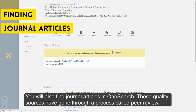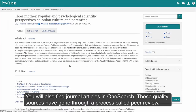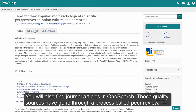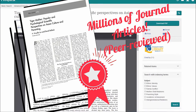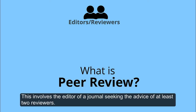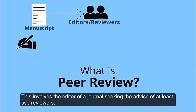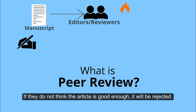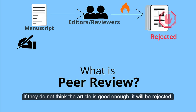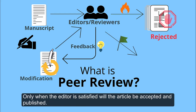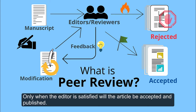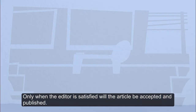You will also find journal articles in OneSearch. These quality sources have gone through a process called peer review. This involves the editor of a journal seeking the advice of at least two reviewers. If they do not think the article is good enough, it will be rejected. Even if they think the article is good, they will usually make suggestions to improve it. Only when the editor is satisfied will the article be accepted and published.